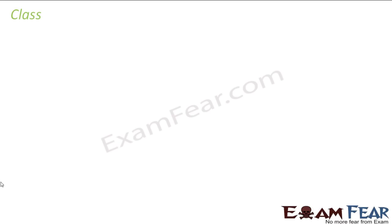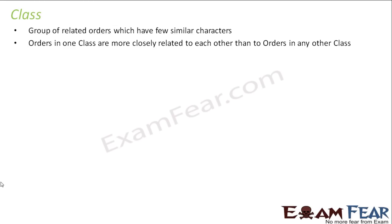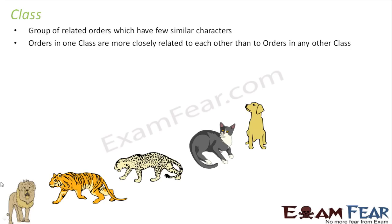Let us look at class. A class is again nothing but a group of related orders which have still fewer characters. When we considered lion, tiger, and leopard, they all belonged to different species but the same genus. When I included cat, it belonged to a different genus but the same family. When I included dog, since they all eat flesh, they all belong to the same order.